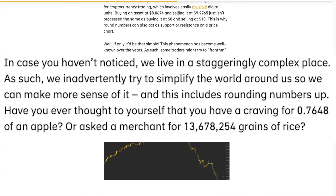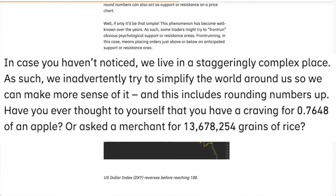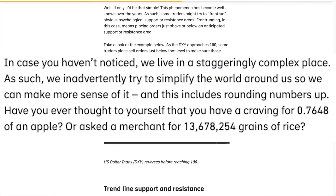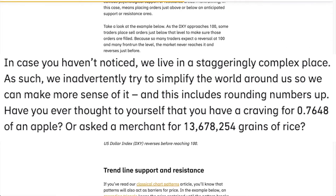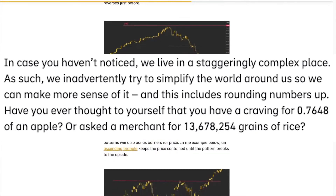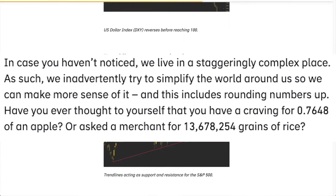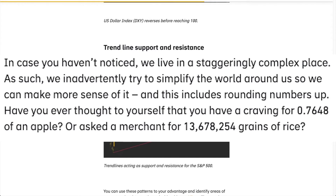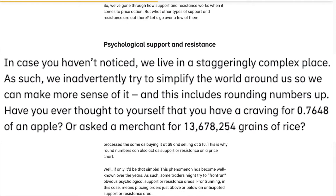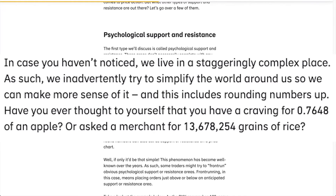We live in a staggeringly complex place, and as such we inadvertently try to simplify the world around us so we can make more sense of it. This includes rounding numbers up. Have you ever thought to ask yourself that you have a craving for 0.7648 of an apple, or ask a merchant for 13,678,254 grains of rice?